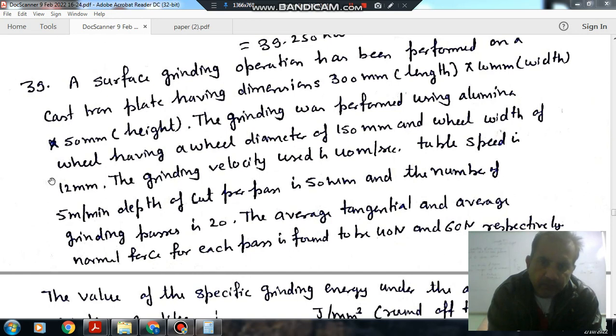The grinding was performed using alumina wheel having a wheel diameter of 150mm and wheel width of 5mm. The grinding velocity used is 40m per second, the table speed is 5m per minute, depth of cut per pass is 50 micrometers and the number of grinding passes is 20. The average tangential and average normal force on each pass is found to be 40N and 60N respectively.